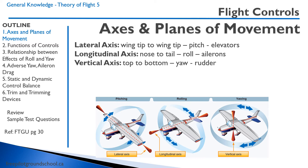Lastly, we have the vertical axis. This is also referred to as the normal axis. It's the axis that runs from the top to the bottom of the aircraft. Movement about the vertical axis is called yaw — yawing left, yawing right — and we use the rudder on the vertical stabilizer of the aircraft to control yaw.